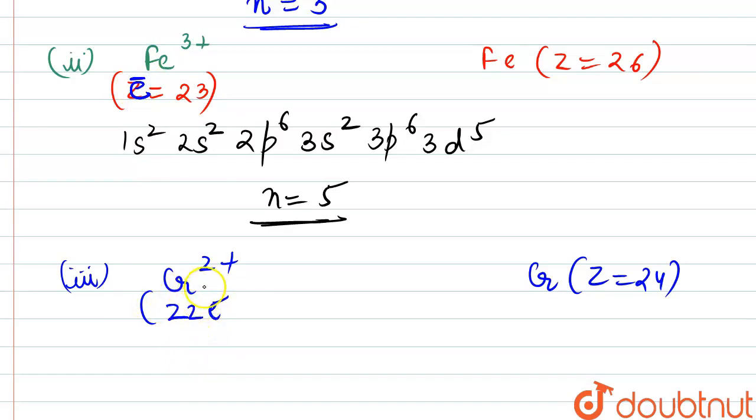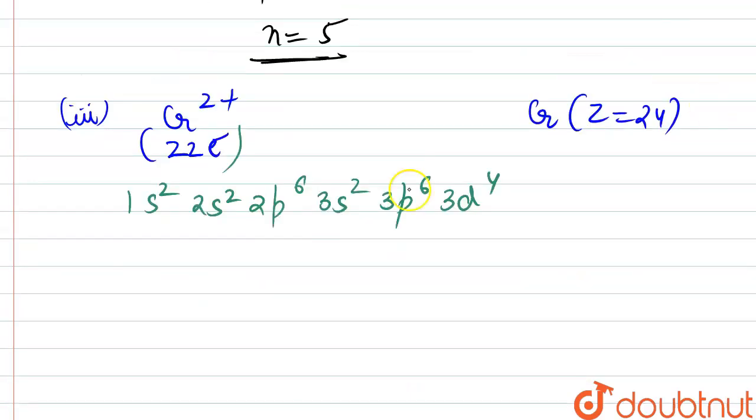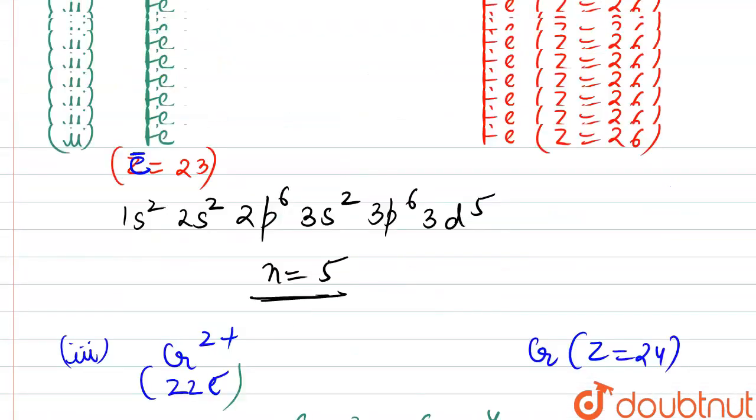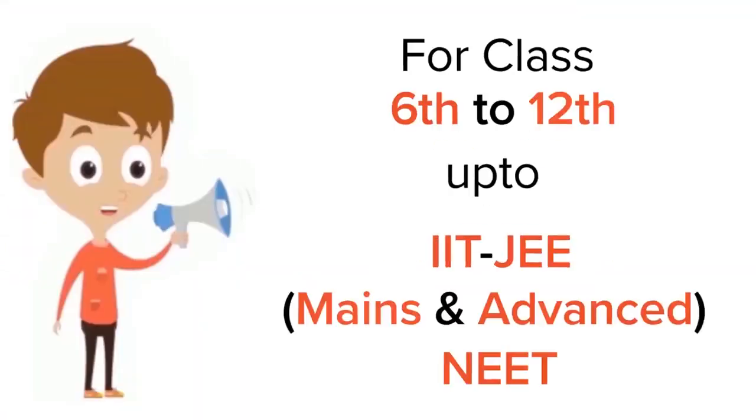So those electrons would be arranged like 1s² 2s² 2p⁶ 3s² 3p⁶ and 3d⁴. So number of unpaired electrons here are clearly 4. This is the respective answer. Thank you.